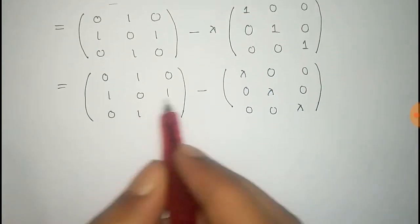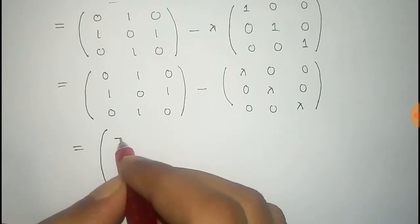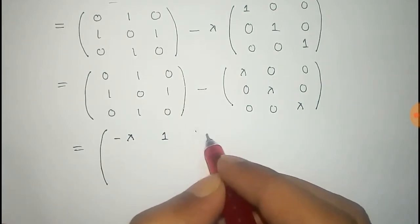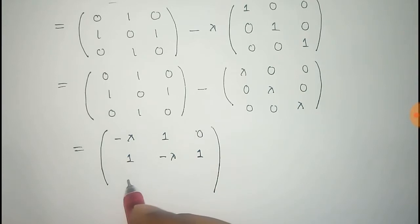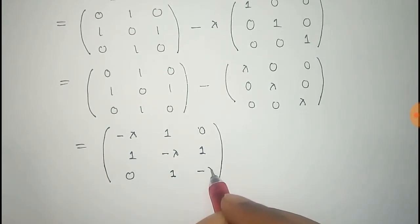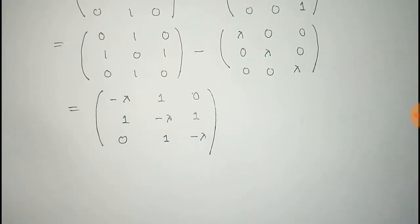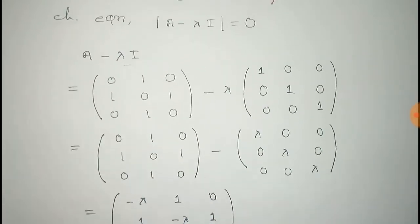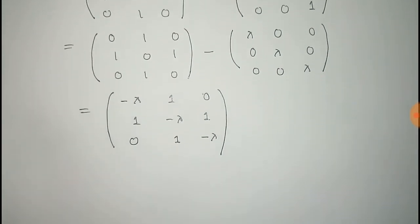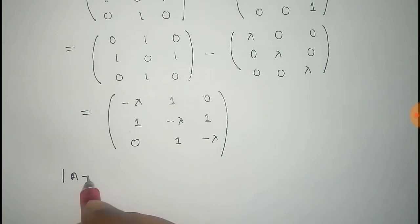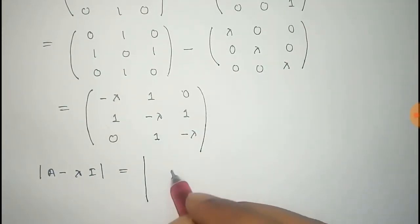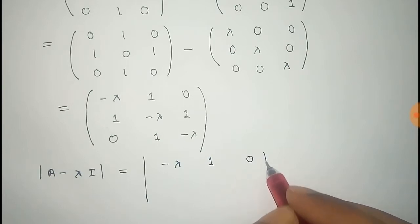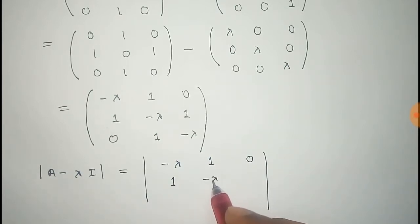Now we have to subtract these two matrices. So the final matrix becomes: minus lambda, 1, 0, 1, minus lambda, 1, 0, 1, minus lambda. We multiply lambda with the identity matrix, so it becomes lambda on the diagonal: lambda, 0, 0, 0, lambda, 0, 0, 0, lambda.